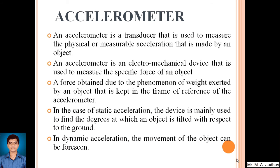An accelerometer is a transducer that is used to measure the physical or measurable acceleration made by an object. An accelerometer is an electromechanical device used to measure the specific force of an object — the force obtained due to the weight exerted by an object kept in the frame of reference of the accelerometer. In static acceleration, the device is mainly used to find the degree at which an object is tilted with respect to the ground. In dynamic acceleration, the motion of the object can be foreseen.